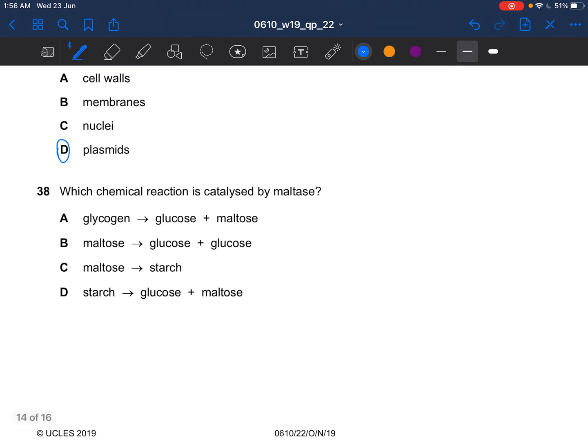Next question, which chemical reaction is catalyzed by maltase? B. Maltase breaks down maltose to glucose. It is not C. Starch is a polysaccharide. Maltose is a disaccharide. Yes, the answer is B. Maltase would break down maltose to glucose.